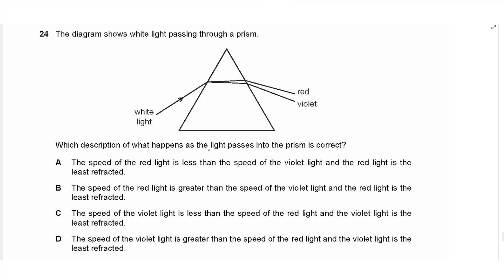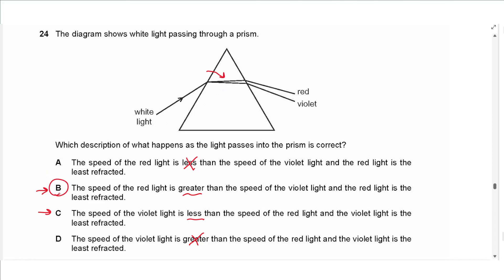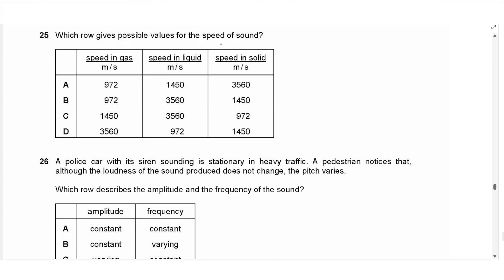Question 24 says: white light passes through a prism. Which description is correct? The speed of red light is greater than the speed of violet light — yes, because violet changes speed more than red in the prism. The speed of violet light is less — yes. So it is either B or C. Red light is least diffracted — yes, red has the least change in direction. So the answer is B.